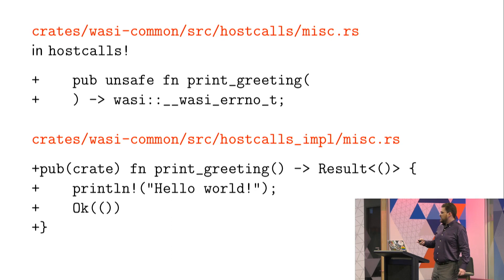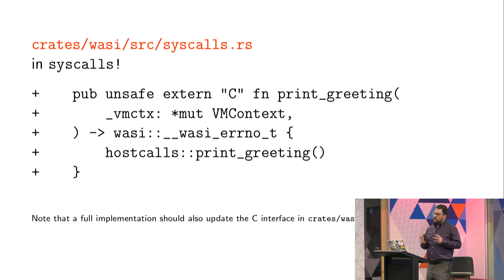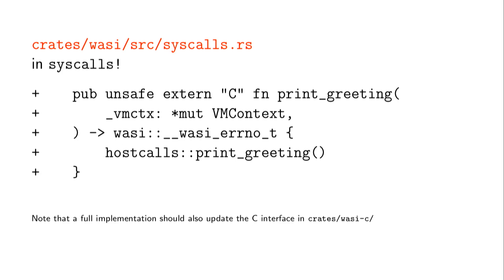Host_calls_impl actually gets to use higher level types like a Rust Result — if it's successful it returns nothing, if it fails it returns some kind of error type. Here we print hello world and return success. The last bit of plumbing is the C layer syscall interface — this is one that should be auto-generated. It's a C signature function that takes a raw pointer to the VM context and returns an errno, and all it does is call the host calls level function. There are about three levels of calls that each system call gets plumbed through: syscall calls host_call, which calls host_call_impl, which does the actual implementation.